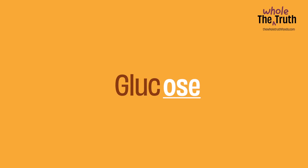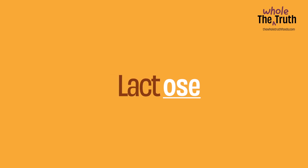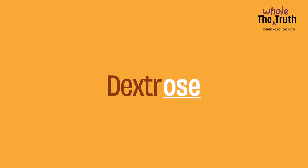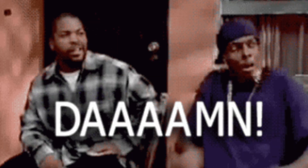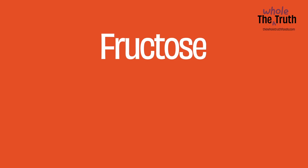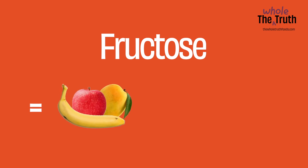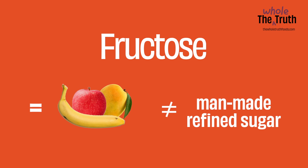Any ingredient in your food that ends with '-ose' is a sugar — so glucose, fructose, lactose (which is the sugar from milk), maltose, dextrose — all sugars. First up, yes, fructose is a sugar found in fruits, but that fructose is very different from the one in man-made refined sugar.